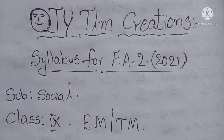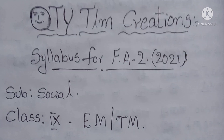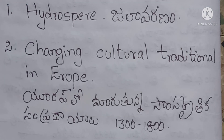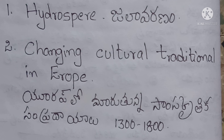First of all, this is only just a model paper — this is not a real paper. You must know about this. For FA2 syllabus, ninth class Social Studies, there are two lessons: first lesson is Hydrosphere, and second lesson is Changing Cultural Traditions in Europe.